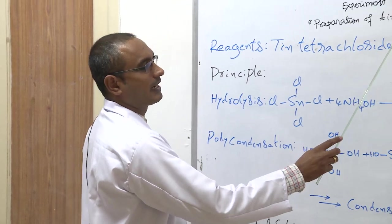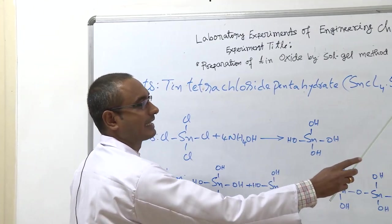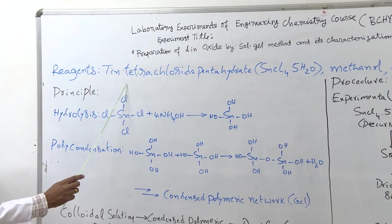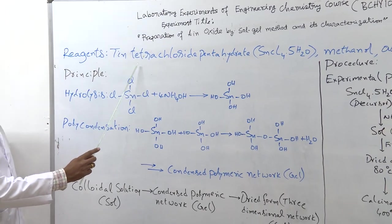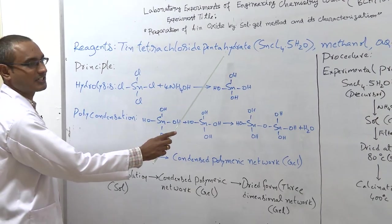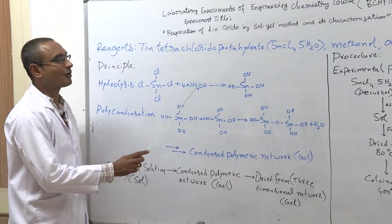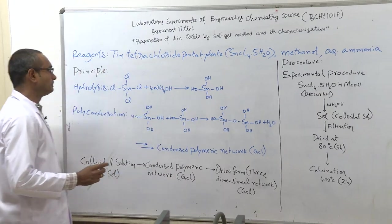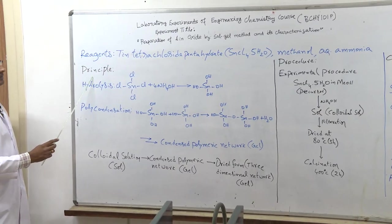Preparation of tin oxide by sol-gel method and its characterization. First of all, we will look what are the reagents we need for this particular experiment. We need tin tetrachloride pentahydrate, it is also called as stannic chloride, methanol, and aqueous ammonia.